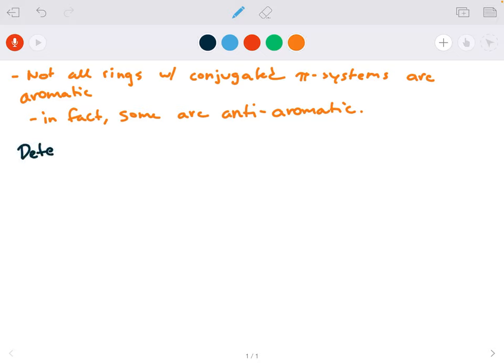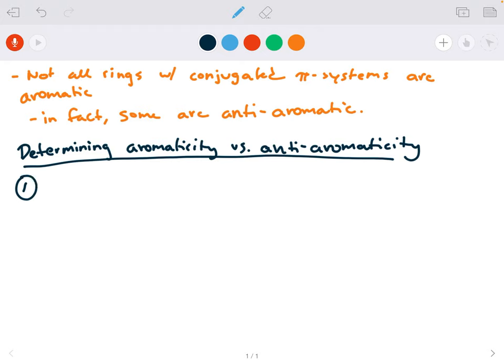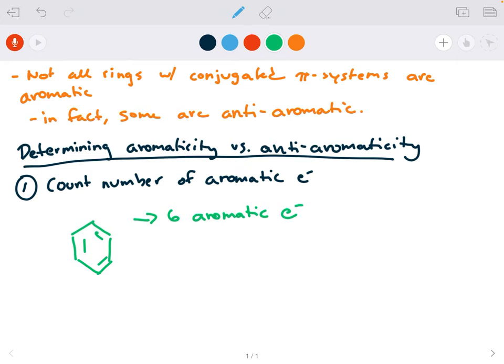So determining aromaticity versus anti-aromaticity. Step one, count the number of aromatic electrons. And what I mean by aromatic electrons is electrons that are part of that conjugated pi system. So in benzene, you have six aromatic electrons. In the compound down here, which is cyclobutadiene, you have four aromatic electrons.